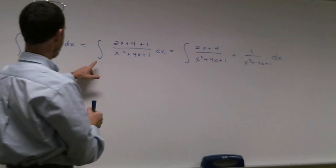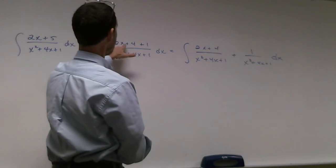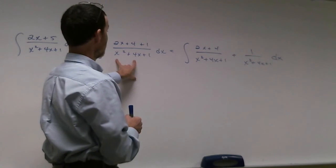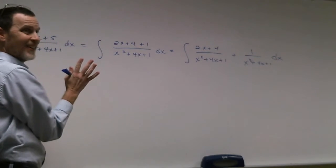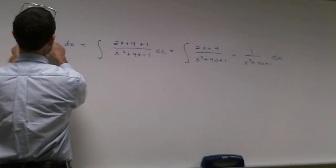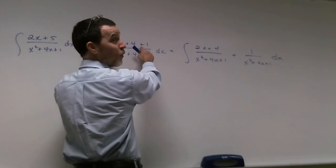Right. Is that the derivative of the bottom? No. 2x plus 4 is, right? But you leave the 1 in? Well, I can't change the function, right? All I'm saying is, you agree that 2x plus 5 is equal to 2x plus 4 plus 1, right?